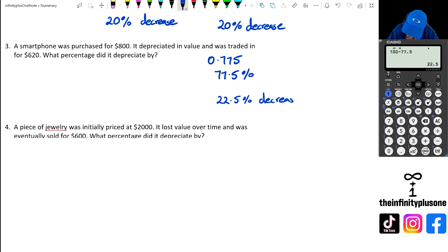But if we were to do it the long method, what we're going to do is 800 take away 620, which equals $180. And then we're going to go 180 out of 800, of course we're going to multiply it by 100, should give us what percentage this item has been reduced by. So 180 out of 800 times 100 is equal to 22.5% decrease.